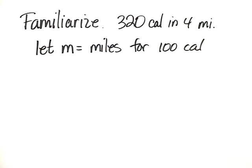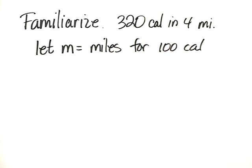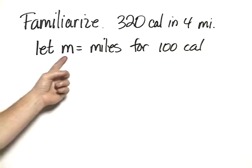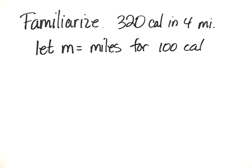First, let's familiarize ourselves with the information. The adult burns 320 calories in 4 miles. We want to know, and we will let m equal the number of miles in order to burn 100 calories.